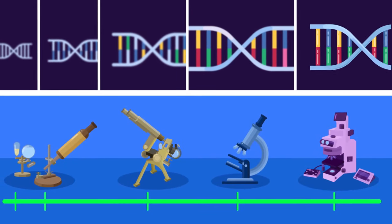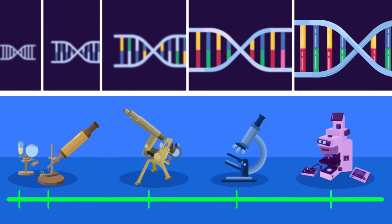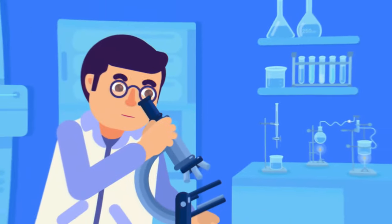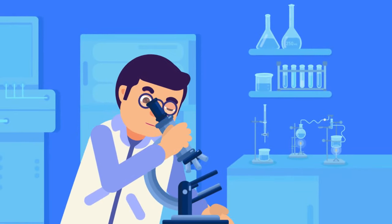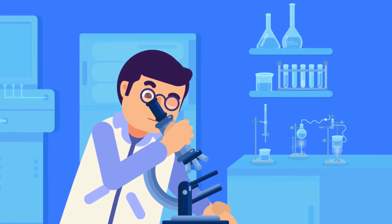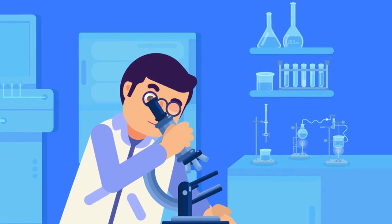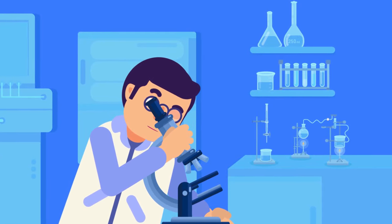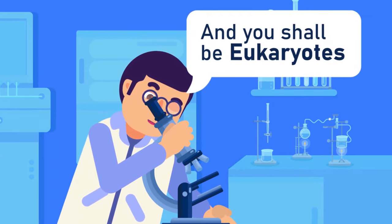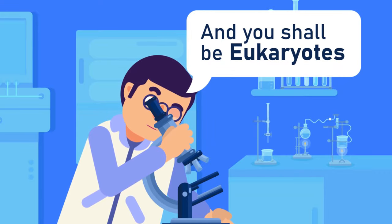After the development of molecular biology and the knowledge of genes increased, scientists classified the living organisms into two super kingdoms, named prokaryote and eukaryote.